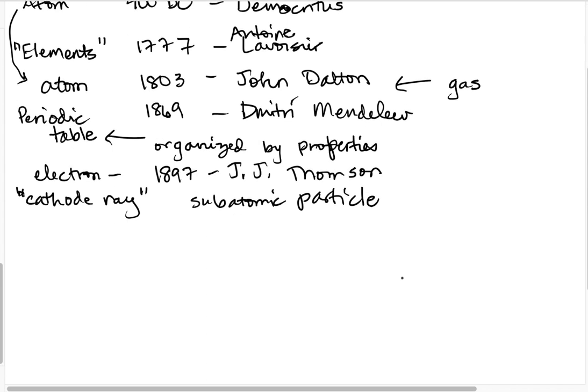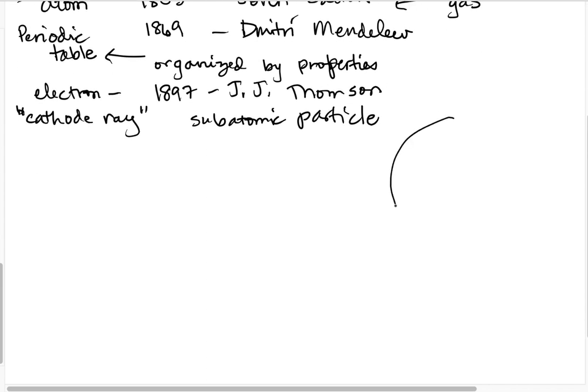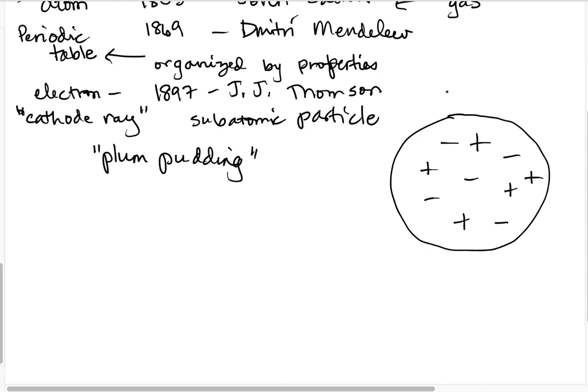So J.J. Thomson actually did propose at this point a model of an atom. He thought that the positive and the negative charges in the atom were kind of equally spread around. This was called, or by him anyway, he described it that the electrons in this atom model were spread around like raisins in a plum pudding. Of course none of us have a plum pudding in the way that he meant. It's sort of a dense cake that has raisins throughout it. You might think of it as more like a chocolate chip cookie, which is a little bit more of a familiar analogy to those of us in the United States.